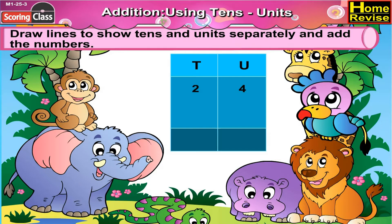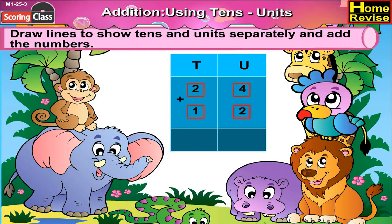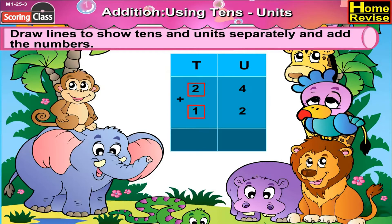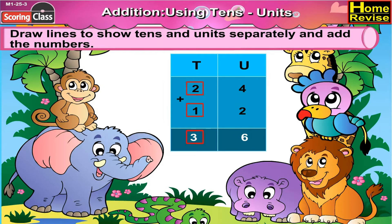Now next is 24 plus 12. Let us draw a line between 24 and 12. Write units above 4 and 2 and write tenths above 2 and 1. 4 plus 2 is 6 and 2 plus 1 is 3. So 24 plus 12 is 36.